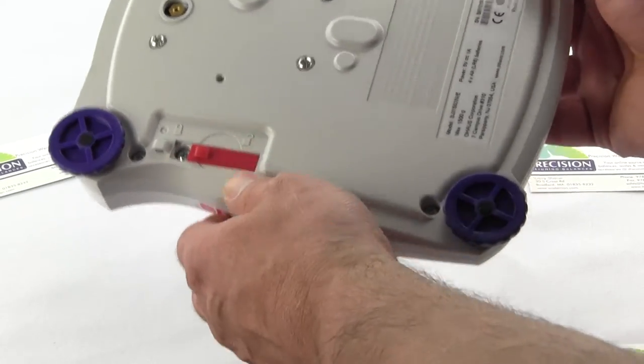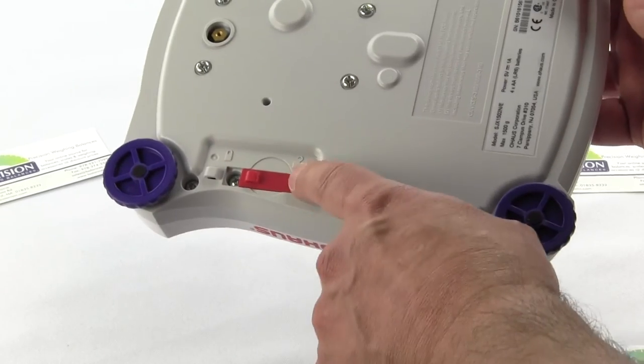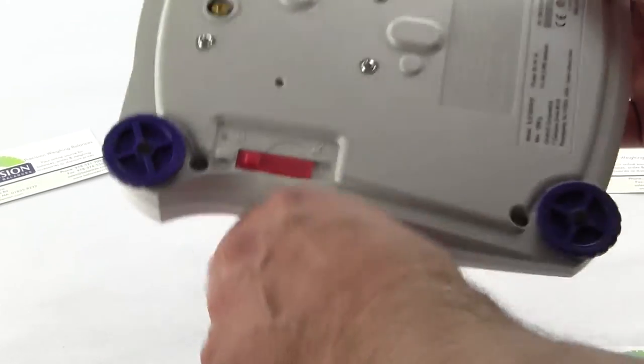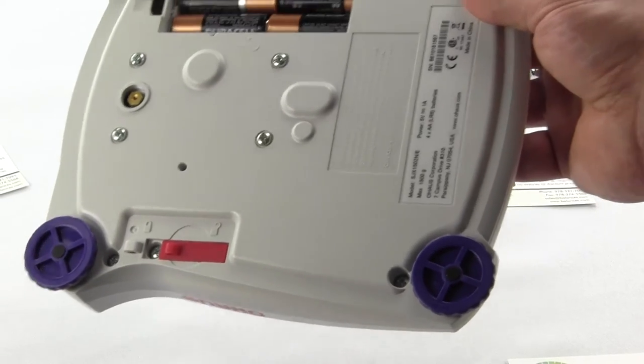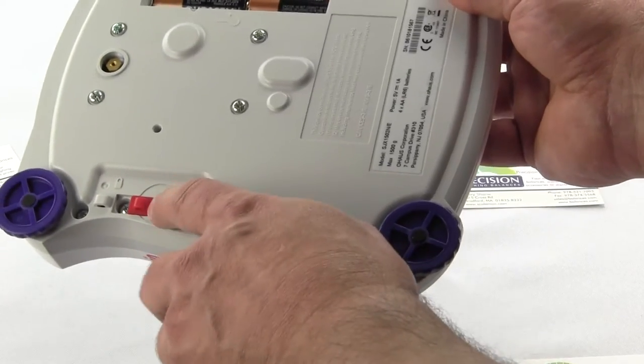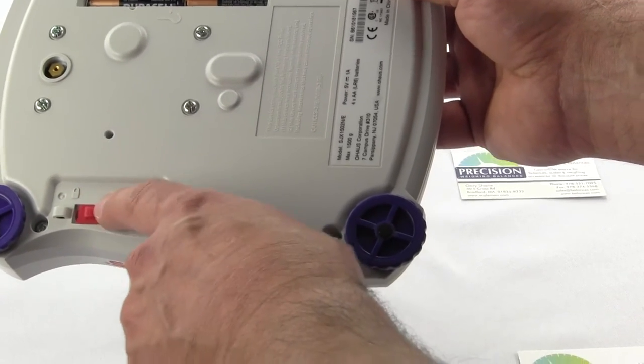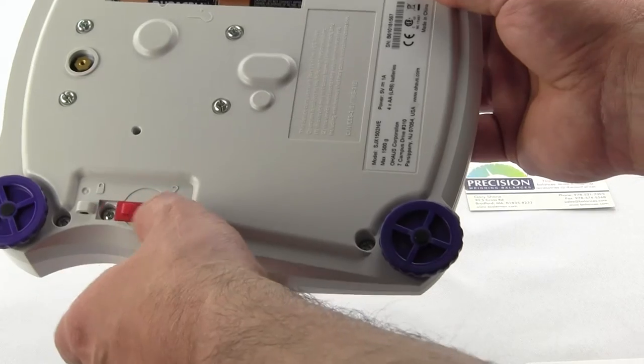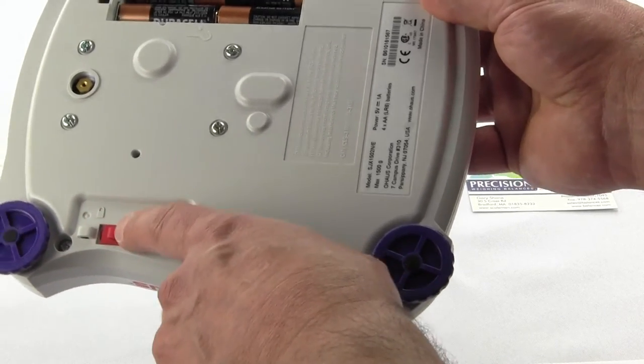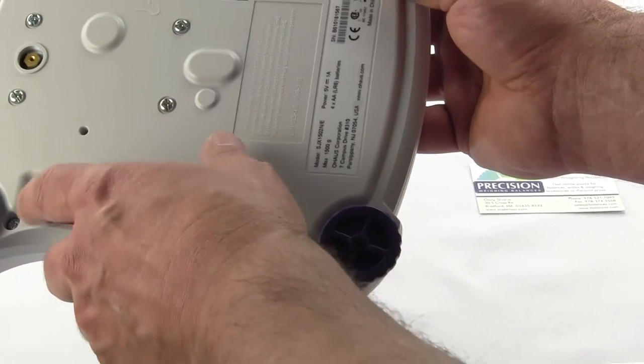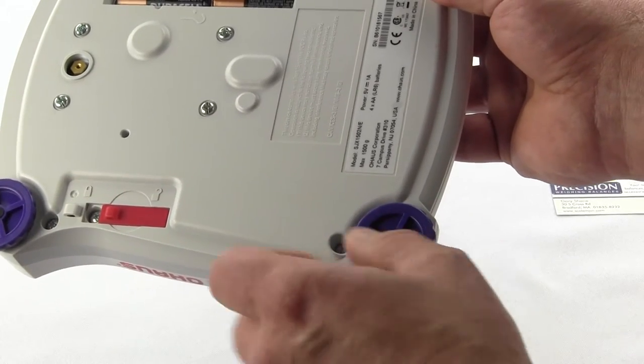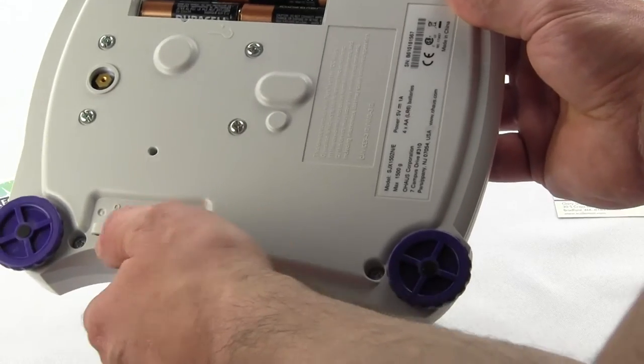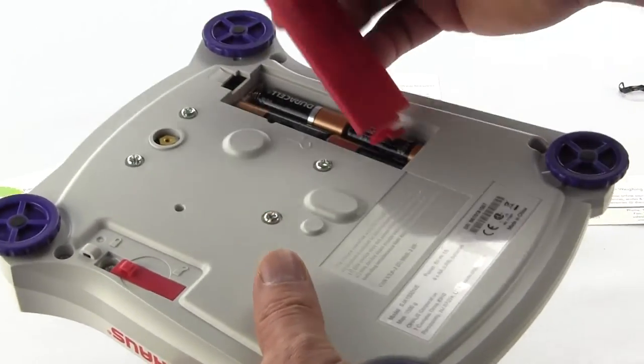You'll notice here this is a security lock. You have unlock and lock. This is if the scale is going to be legal for trade, they would lock it into the lock position preventing you from doing calibration. Unlock, you can change the configuration. One thing you want to make sure is whatever it clicked in last is the mode that it's in. You have to make sure it clicks. So let's leave this in the unlock position for now. I want to put this battery cover back on so that we can operate this off of batteries instead of AC adapter.